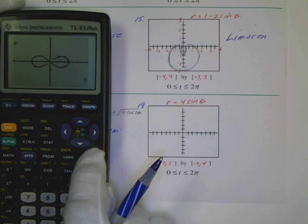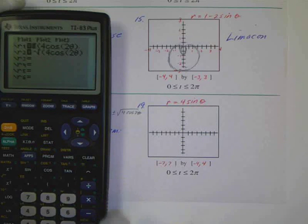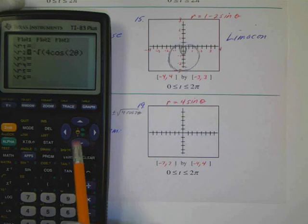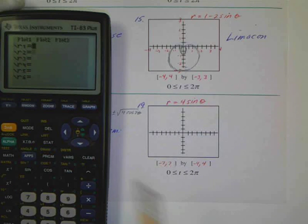And let's do number 19 to see if this is done. So 19 will be up here. And that's just going to be a nice easy one. Clear this. And that's going to be 4 sine of theta.